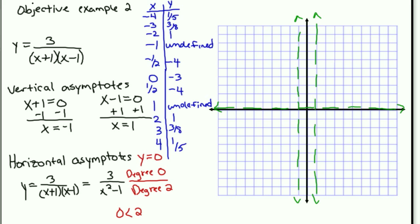Okay, so there're going to be three different curves here because the regions are separated into three different regions by our asymptotes. So negative 4, 1 fifth, negative 3, 3 eighths, negative 2, 1.